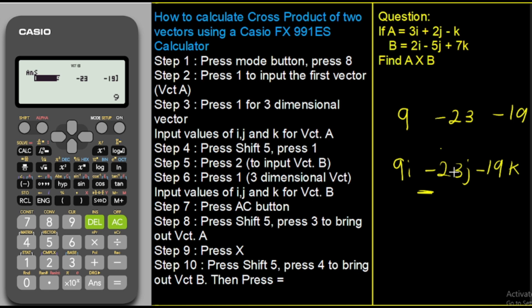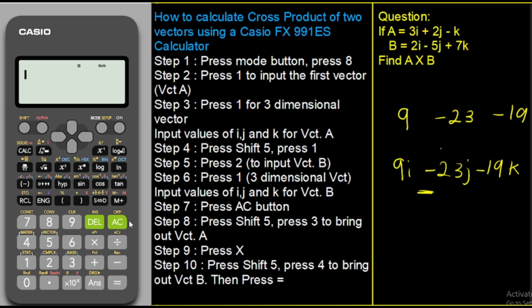When you're done calculating your vector cross product, it is very important to put your calculator back in normal mode so you can use it for other calculations. To do this, press the mode button and then press number 1. Your calculator is back to normal mode. You only take it back to vector mode when you want to calculate vector cross products and the like.